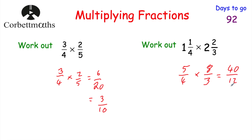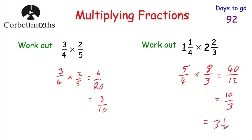Now this is top-heavy and it can be cancelled down. We can divide both the numerator and denominator by 4: 40 divided by 4 is 10, and 12 divided by 4 is 3. So that's 10 thirds. Changing that into a mixed number — how many 3s go into 10? That's going to be 3, remainder 1. So the answer would be 3 and a third. So 1 and a quarter multiplied by 2 and 2 thirds would be 3 and a third.